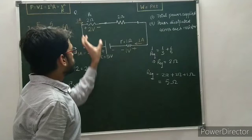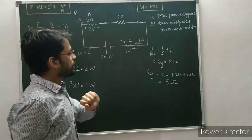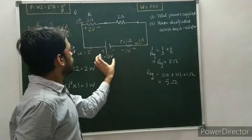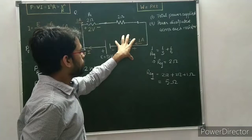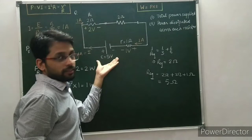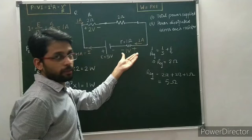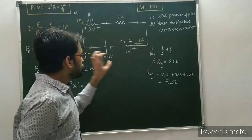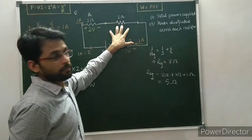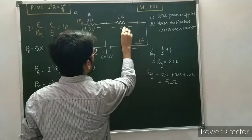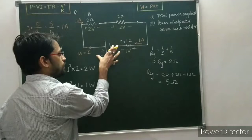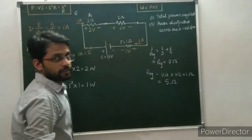In a series circuit the potential difference is divided while the current remains the same. Out of the 5 volt potential difference, 2 volt appear across R1 and 1 volt appears across the internal resistance. So the remaining potential difference must appear across the parallel combination.